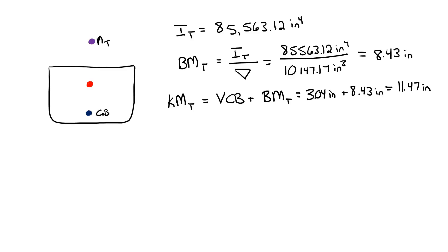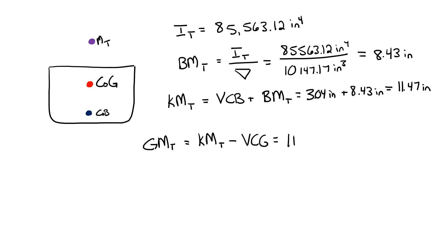As mentioned in the stability introduction, our metacentric height is the most important part of our stability calculations. Since we know how far the metacenter is above the baseline, and we already know that our center of gravity is a certain distance above our baseline, we can just subtract the two. My center of gravity was 6.06 inches above the baseline, and therefore my metacentric height is 5.41 inches.